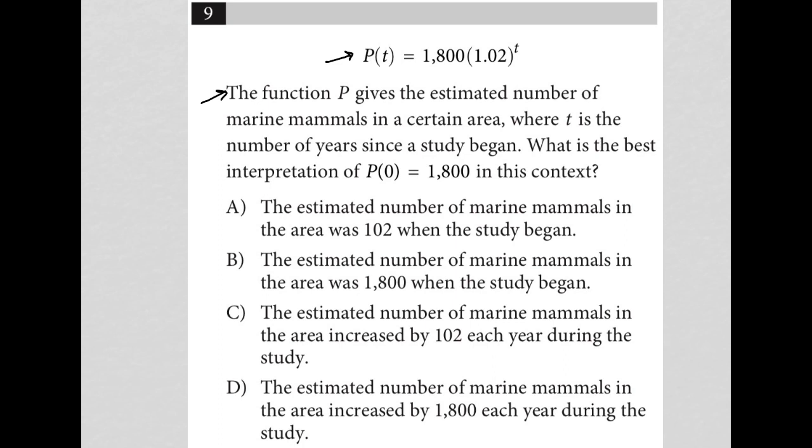Okay, so marine animals and years. What is the best interpretation of P of 0 equals 1800? Well, 0 is replacing t from our original function. We were told that t is the number of years since the study began.